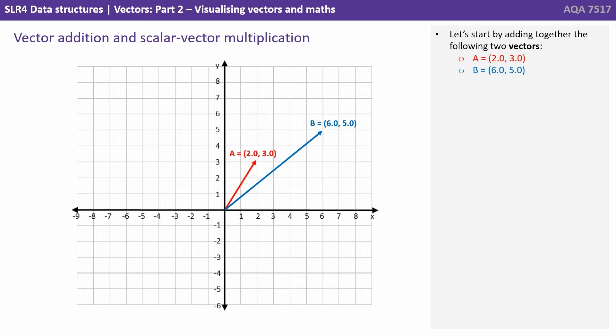So let's start by adding together the following two vectors A and B. Vector addition achieves what we call translation. You can see we've added the first two values of vector A and B, that's the 2 and the 6 to get 8.